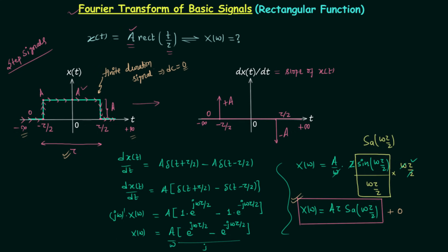This is the final result. Notice that A tau is the area of the rectangle — tau is the width and A is the height, so A tau is the area. Also, tau by 2 is the duration over which the signal equals A divided by 2. Remember these points. This is all for this lecture.